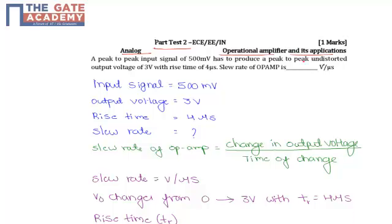The question says that a peak to peak input signal of 500 mV has to produce a peak to peak undistorted output voltage of 3 volts with a rise time of 4 microseconds. We need to calculate the slew rate of the op-amp.